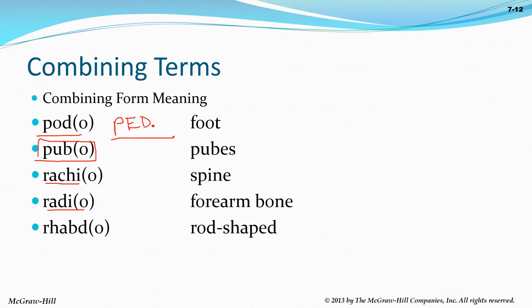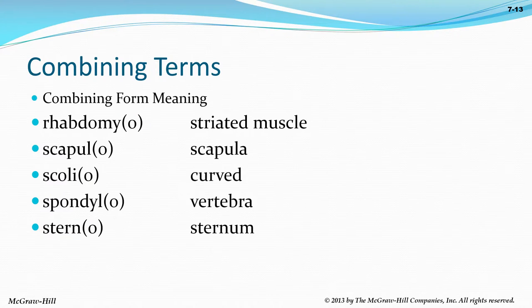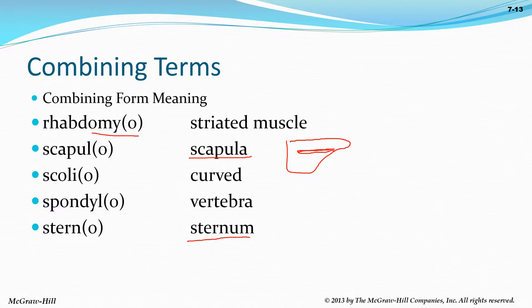Rachi refers to the spine. The radius is the forearm bone on the thumb side — it's the bone that rotates. Rhabdo means rod-shaped, referring to striated skeletal muscles. The scapula looks like a spatula — a flat triangular bone with a little ridge in the middle. Scoliosis is lateral curvature of the spine — side to side. The sternum has three parts: the manubrium on top, the body of the sternum, and the xiphoid process at the bottom.